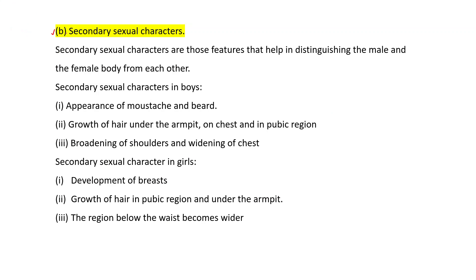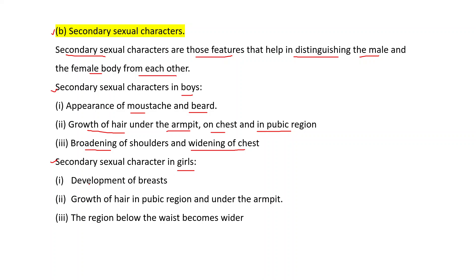Secondary sexual characters are those features that help distinguish the male and the female body from each other. Secondary sexual characters in boys: appearance of mustache and beard; growth of hair under the armpit, on chest, and in pubic region; broadening of shoulders and widening of chest. Secondary sexual characters in girls: development of breasts; growth of hair in pubic region and under the armpit; the region below the waist becomes wider.